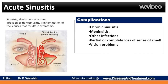Acute sinusitis may be a flare-up of a long-term problem known as chronic sinusitis, which lasts longer than 12 weeks. Meningitis — this infection causes inflammation of the membranes and fluids surrounding your brain and spinal cord. Uncommonly, infection can spread to the bones (osteomyelitis) or skin (cellulitis). Nasal obstruction and inflammation of the olfactory nerve can cause temporary or permanent loss of smell. If infection spreads to your eye socket, it can cause reduced vision or even permanent blindness.